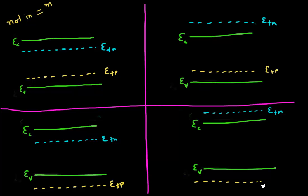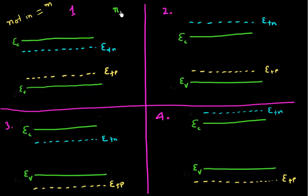What I'm interested in finding out is which one of these scenarios gives me the condition for population inversion. I'll label them as scenarios one, two, three, and four. Does any of these give me N2 greater than N1, or N2 divided by N1 greater than 1?